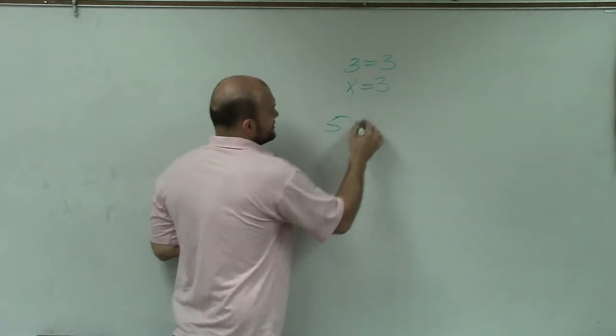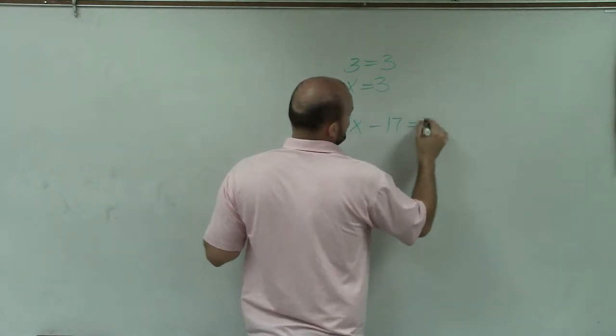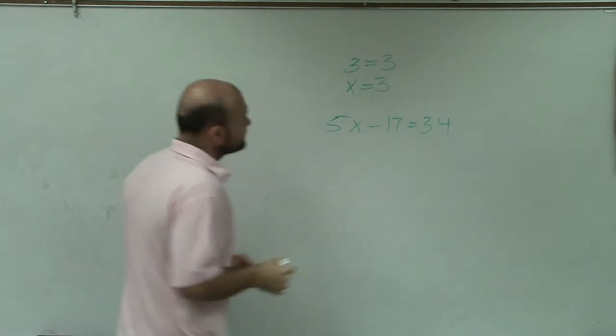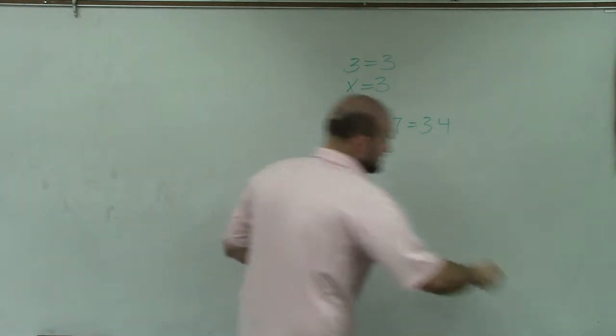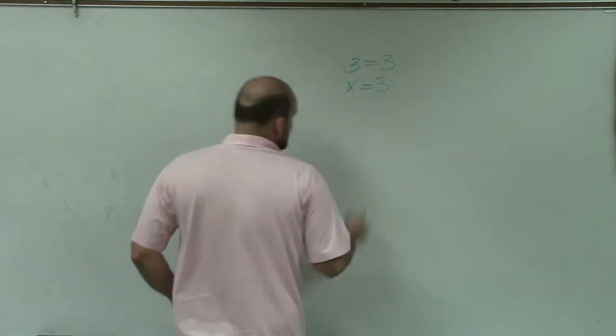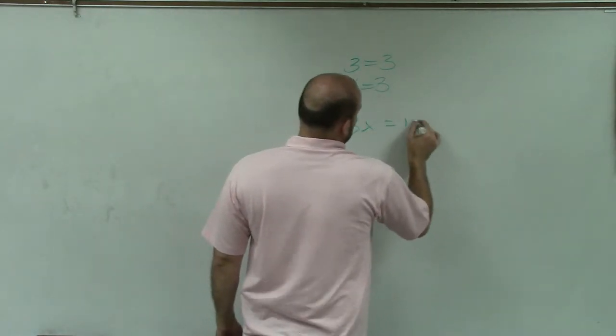Right? So when we're getting into 5x minus 17 equals 34—when we get into this, actually, let's do something simple because I just made up some kind of weird one. So let's say 3x equals 12.